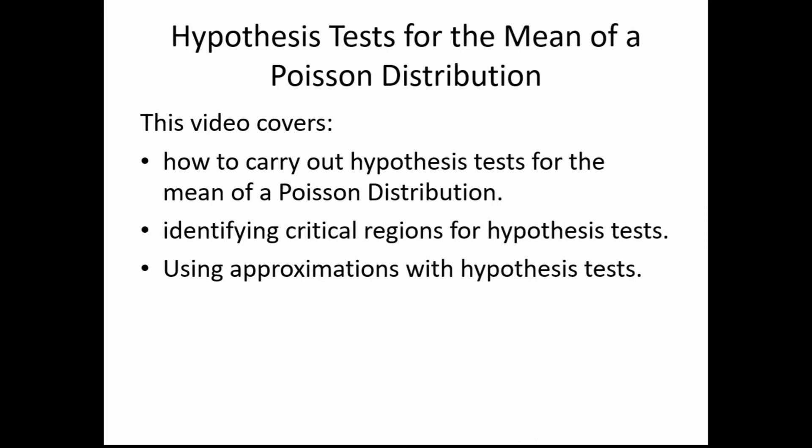Hello folks. Today's video is on hypothesis tests for the mean of a Poisson distribution. Hopefully you remember doing hypothesis tests for a binomial distribution — for the proportion of a binomial distribution — last year, and the process for a Poisson distribution is very similar. We're going to look at how to carry out a hypothesis test, how to identify critical regions, which is similar to what we did last year, and finally we'll look at an example that uses approximations.